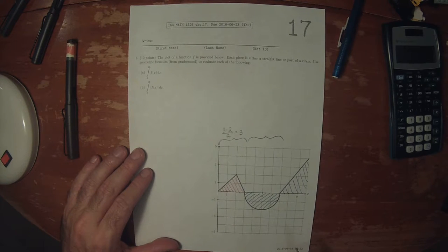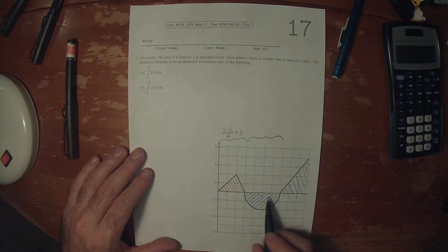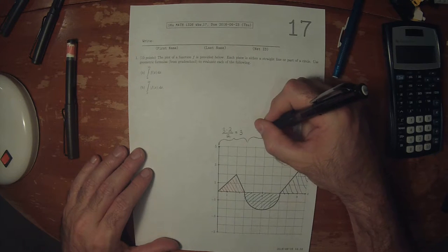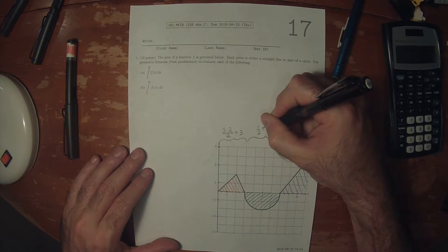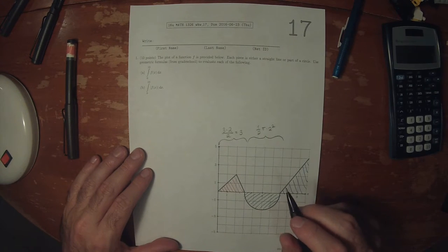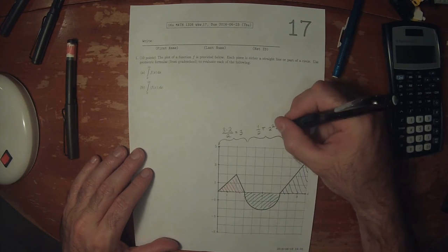The circle is a circle of radius two, and it's half of a circle. So it will be one-half pi multiplied by two squared. So that's four pi over two, so that's two pi.